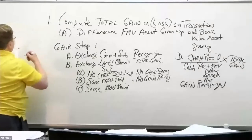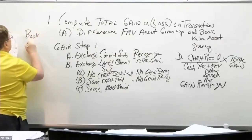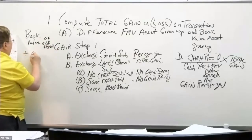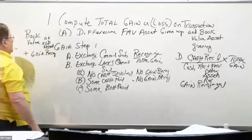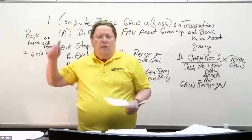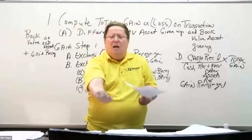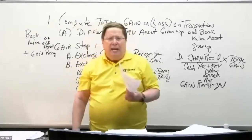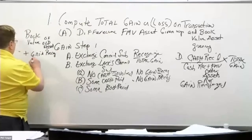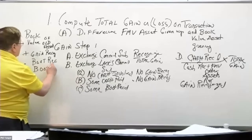In accounting, the new basis is not equal to the old basis. The old basis is the book value of the old asset. You add any gain recognized — because gain on a transaction increases the basis — and by increasing the basis, when you sell that asset at a gain, you're not recognizing the gain twice. The gain steps up the basis, reducing future gains. Then we subtract any boot received and add any boot paid.